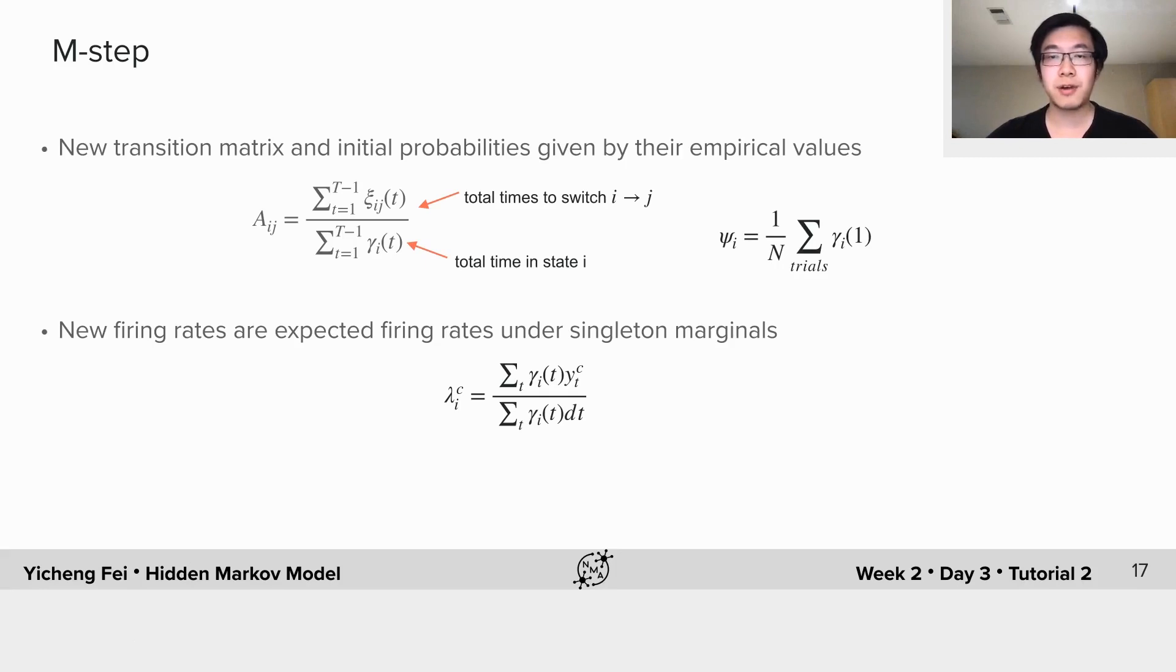The new initial probabilities are simply the average of each state at time 1 across all trials. Similarly, the new firing rate for each cell can be calculated as the expected spike counts in state i, normalized by the total time in state i.